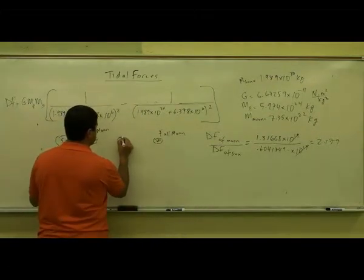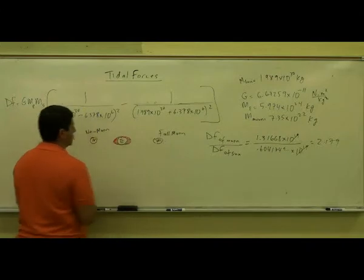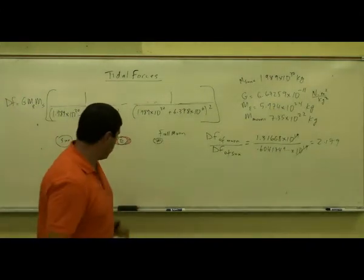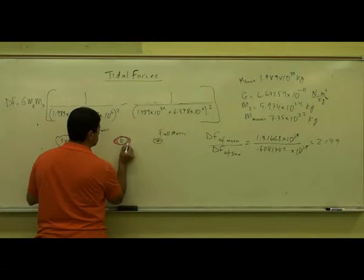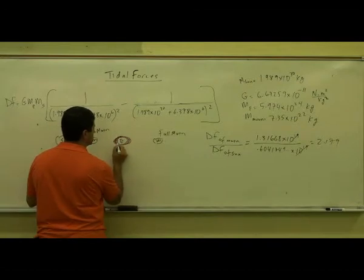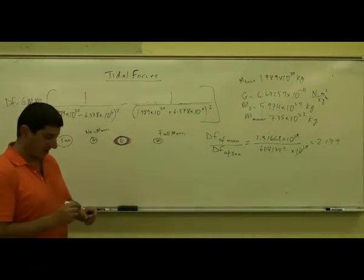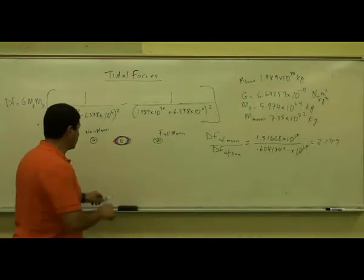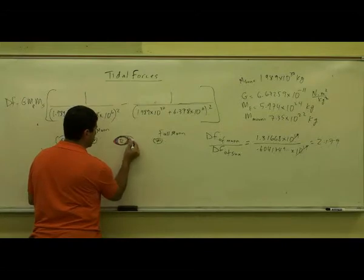Imagine this is the tidal force of the Moon — I'm exaggerating here — and now the tidal force due to the Sun is about half of that. When you add those two together, since the Moon's tidal force is twice the Sun's, the combined effect stretches out like this — the forces add up and reinforce each other.